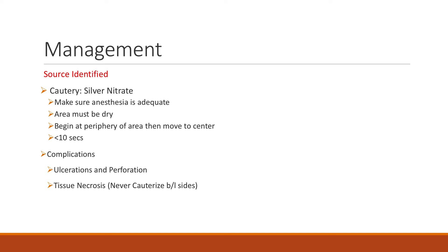If you're unsuccessful with that method but you do visualize the source, you can use cautery — usually silver nitrate, which is your chemical method. When applying it, you want to go peripherally to medially for about 10 seconds. You'll see the area turn a whitish color. Make sure you don't leave it on too long because you can cause ulceration and perforation. If you do bilateral sides, you can actually cause necrosis. Electrical cautery usually requires ENT due to risk of complications such as perforation.